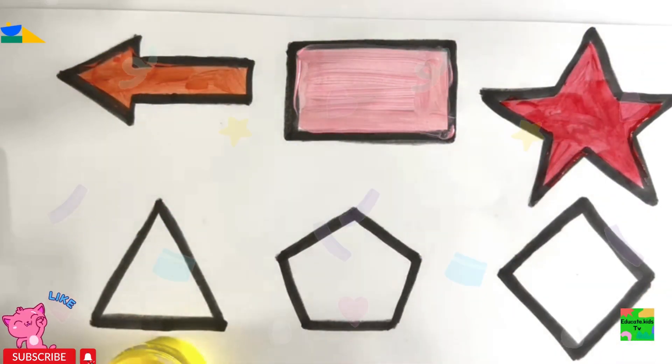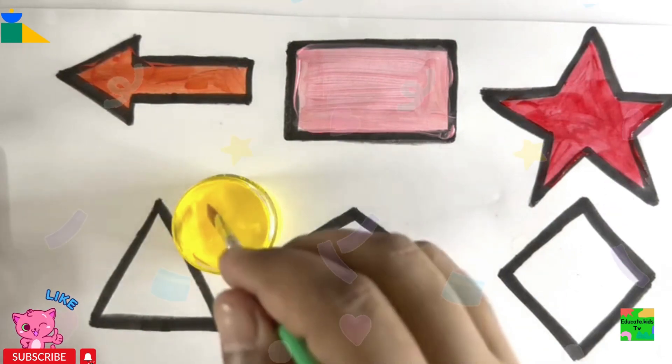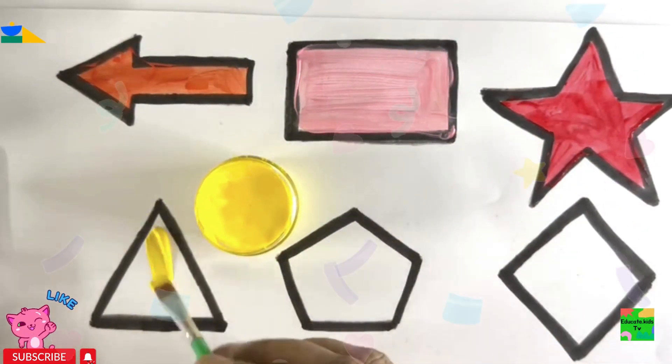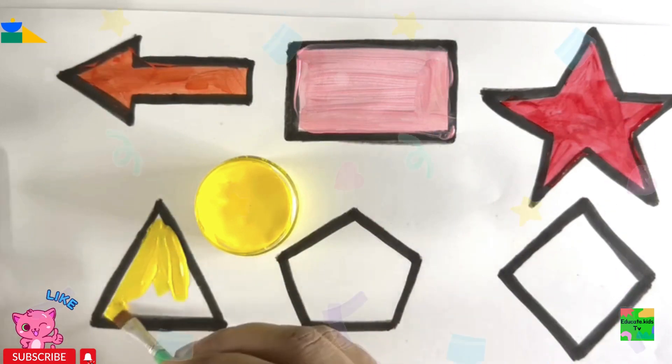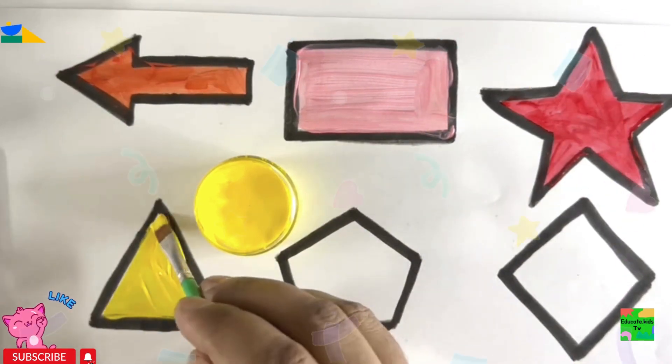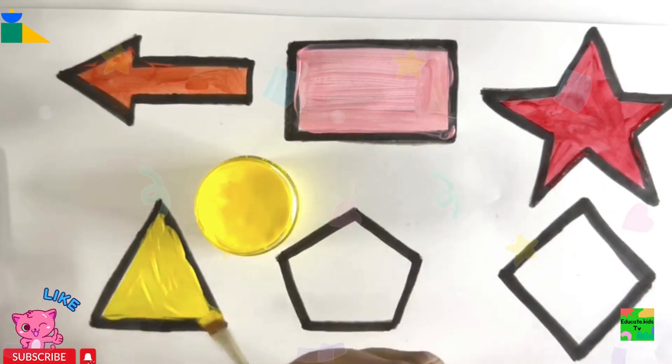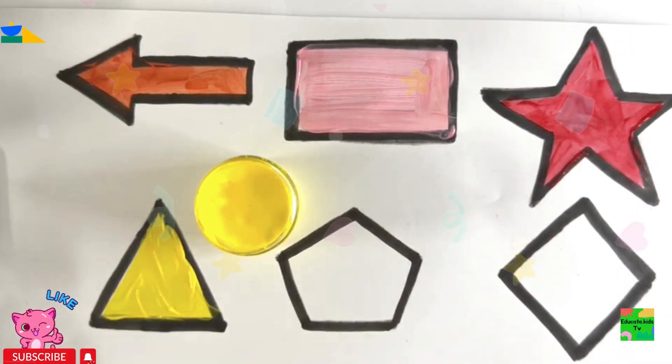Now I'll take yellow color and I'll paint my triangle. Hooray, wow, yellow triangle, yay, hooray.